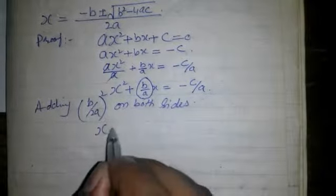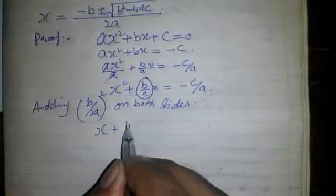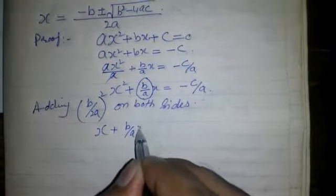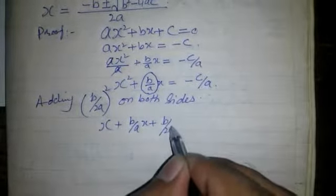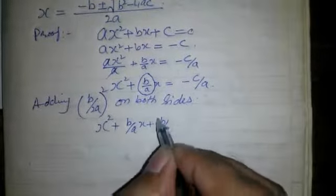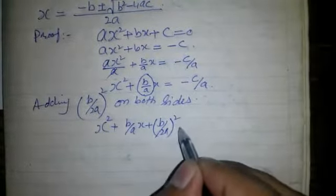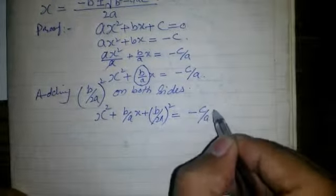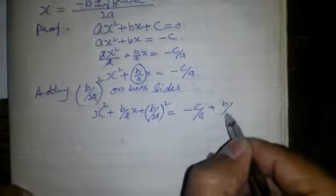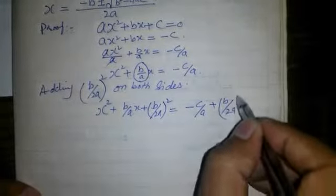So we get x² + B/A·x + (B/2A)² = -C/A + (B/2A)².